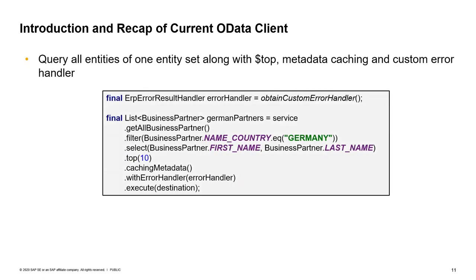The last example covering the current OData client is a more complex one illustrating additional features: cachingMetadata, which enables caching of the metadata document so we don't call for metadata every time; and withErrorHandler, which allows you to specify a custom error handler to influence how exceptions look. Again, we call execute at the end.